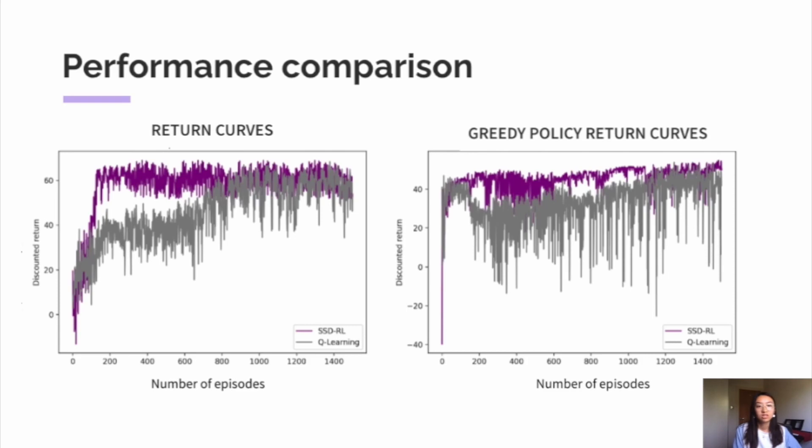And we can observe that SSDRL outperforms deep Q-learning in both curves. It's able to reach a high return much earlier on in training, and its greedy policy learns steadily and maintains a higher return than deep Q-learning throughout training. The performance gain here is actually much more significant than the gain we achieved with grid world environments, as we managed to converge seven times faster than deep Q-learning.